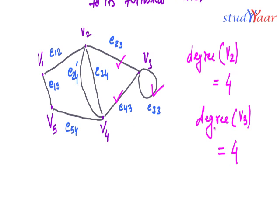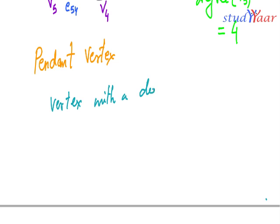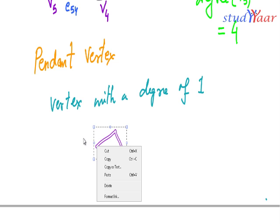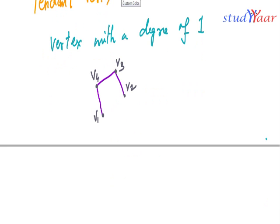Now we are going to see what is a pendant vertex. That is very simple — it is simply a vertex with a degree of 1. For example, suppose I have a graph with vertices V1, V2, V3, and V4. The degree of V2 over here is 1, therefore V2 is going to be a pendant vertex.